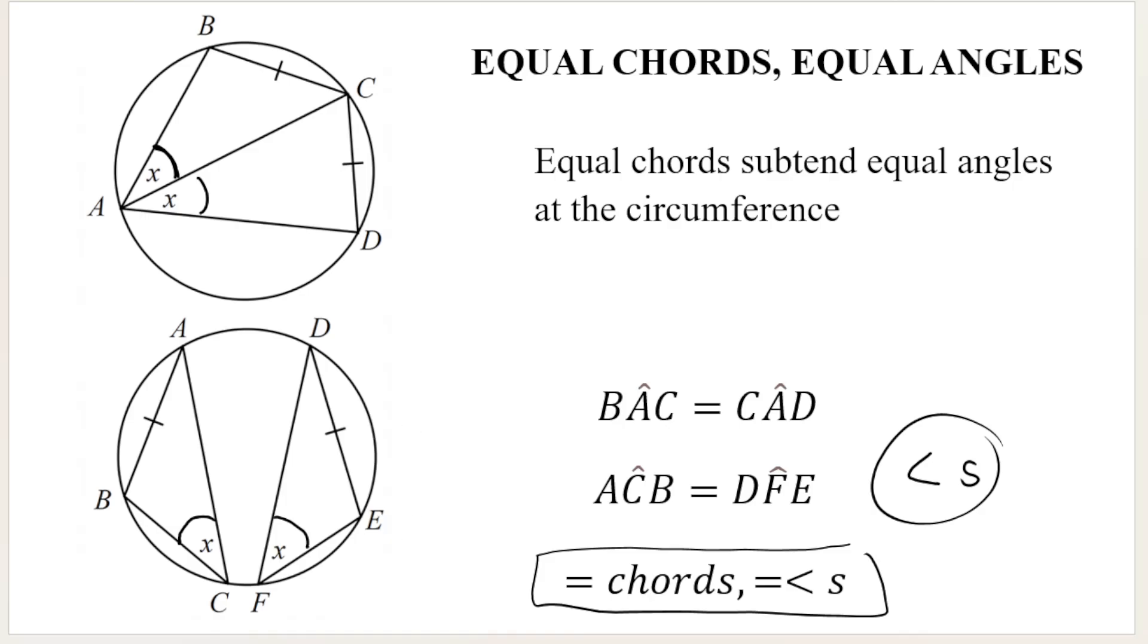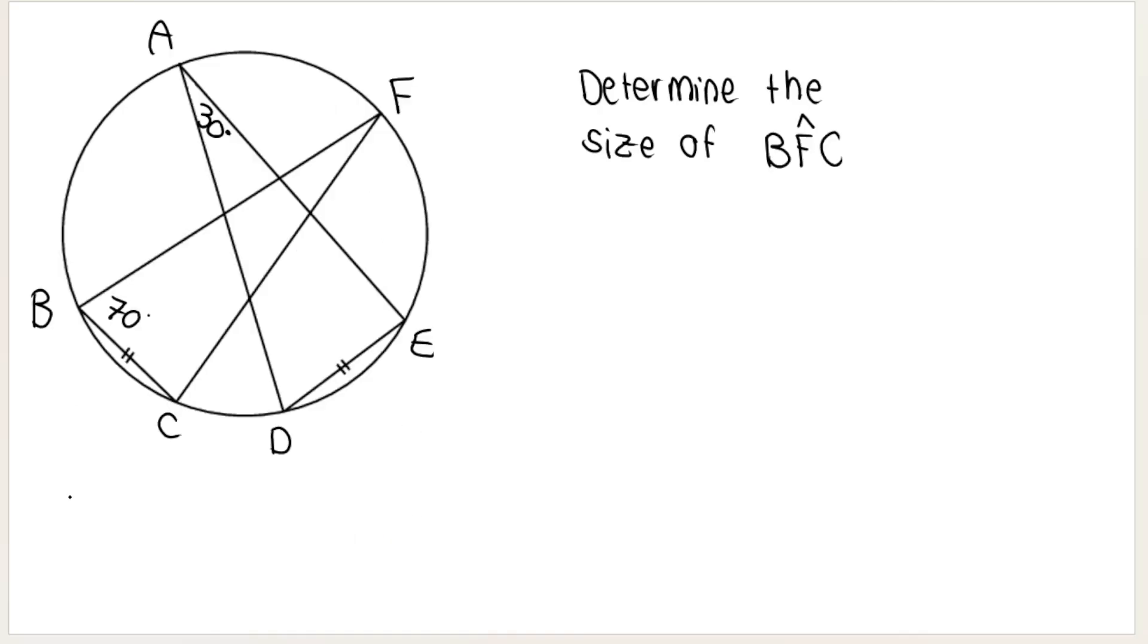So if this was our question, for example, they want us to determine the size of angle B, F, C. So B, F, C, we are referring to this angle over here. You can see that opposite that angle, we've got a chord, chord BC.